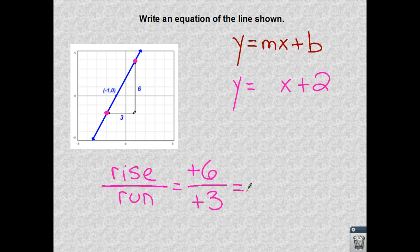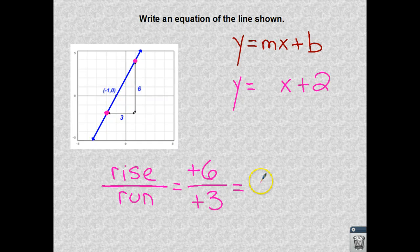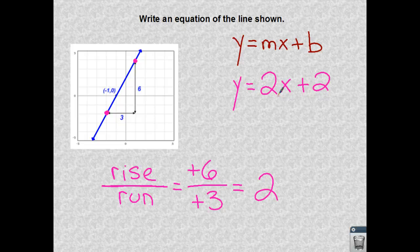And now I have a reduced possibility. I can reduce this fraction of 6 over 3. So I have a slope of 2. So if I have it in slope-intercept form, the equation is y equals 2x plus 2.